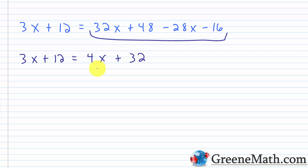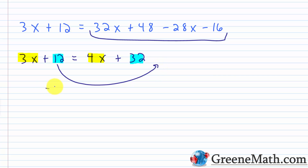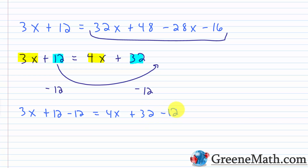My second step is to move all variable terms to one side and all constants to the other. Four x and three x are variable terms; 12 and 32 are constants. I'll subtract 12 from each side of the equation — plus 12 minus 12 equals zero, so the left side is just three x. This equals four x plus 32 minus 12, which is 20.